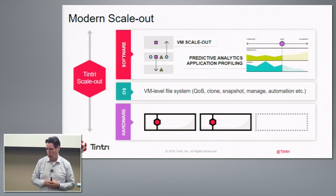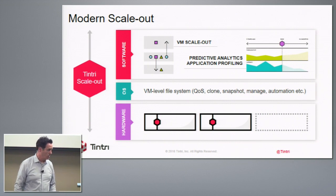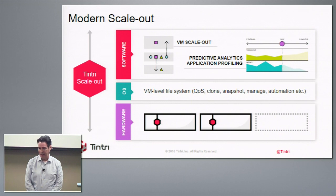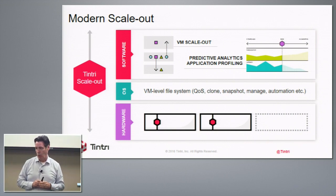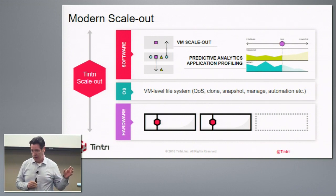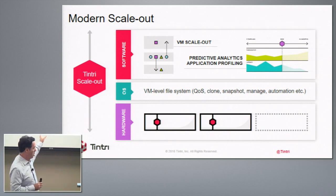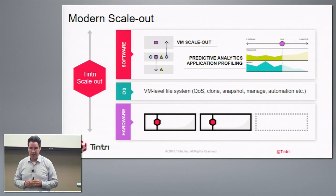We also introduced new hardware models — all-flash-based systems ranging from 17 terabytes up to 308 terabytes effective. We introduced predictive analytics, which is different from the real-time analytics we've had since the earliest days, and we'll give you a demo of that. So there are three components: the base hardware platform, the scale-out software, and the predictive analytics. The benefits include going from a 17-terabyte environment right up to a 10-petabyte environment.